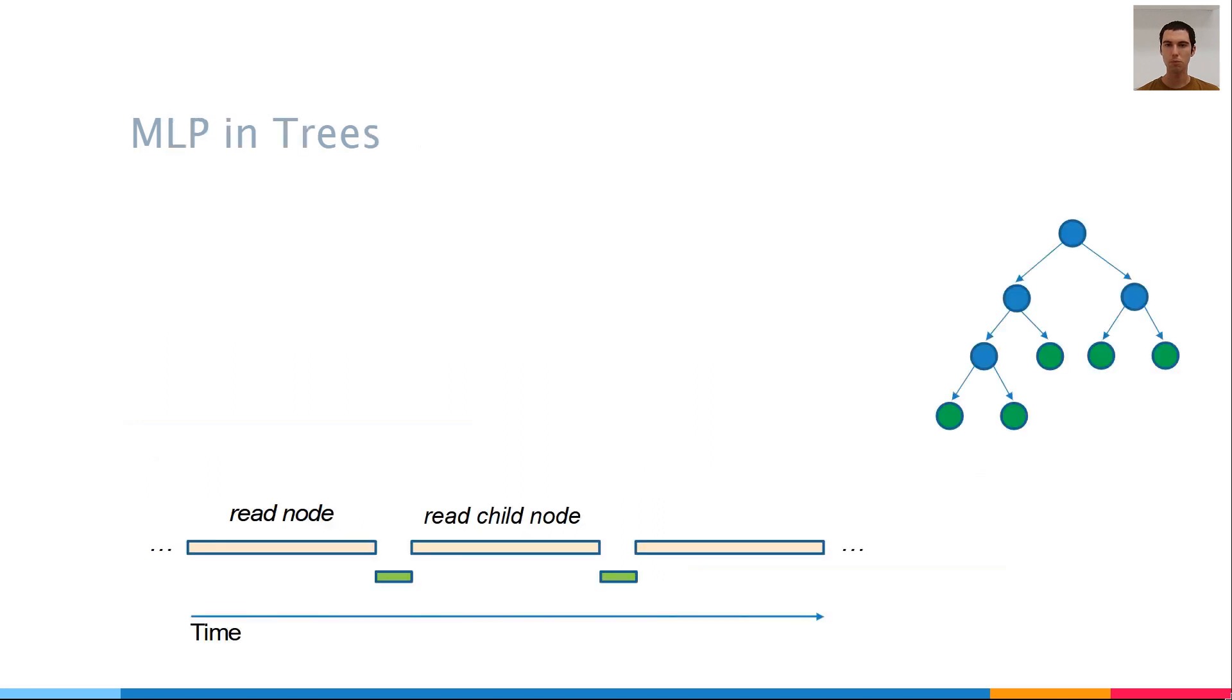Now, what happens when we search a tree? Trees don't benefit at all from the ability to perform memory accesses in parallel. The reason is that memory accesses are dependent on each other. We cannot start reading a child node before we finish reading the parent node, because the address of the child is stored in the parent. This dependency means that trees don't utilize MLP at all.